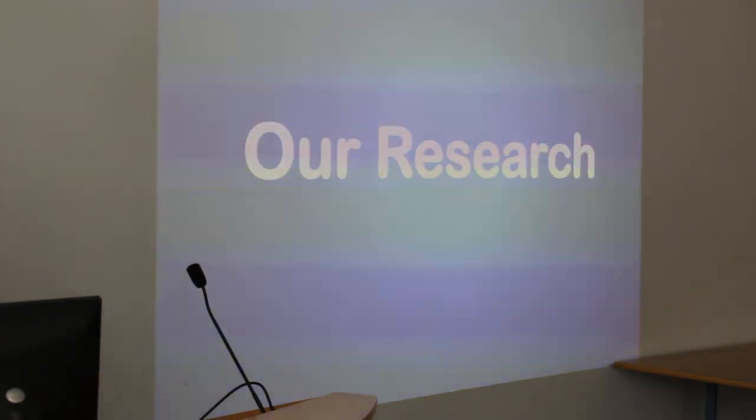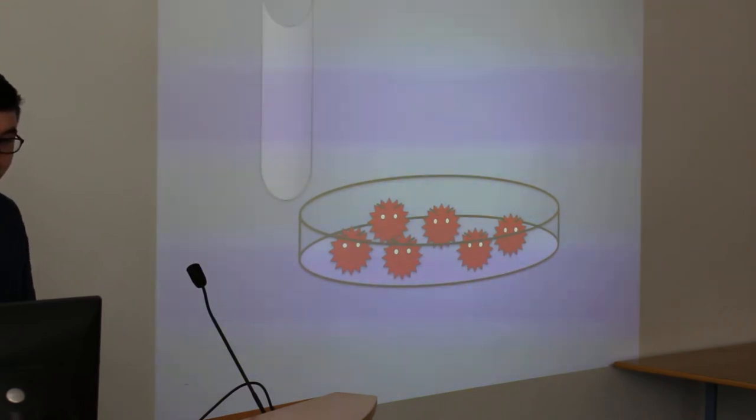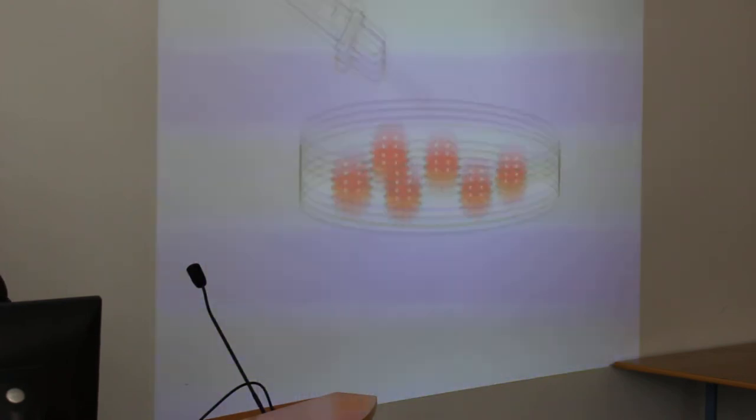Our research in the NICB has focused on growing HER2 positive breast cancer cells in the lab, treating them with HER2 targeted therapies, and waiting for resistance cells to emerge. This can be a quick process or it can take 6 to 12 months. We then analyze these cells and look at protein levels and genetic changes.